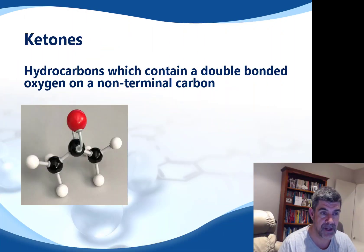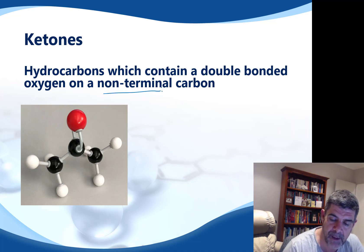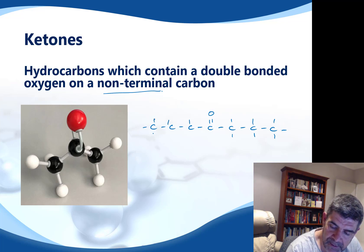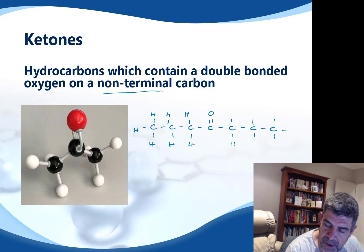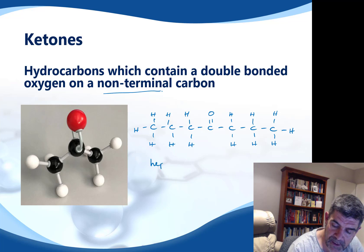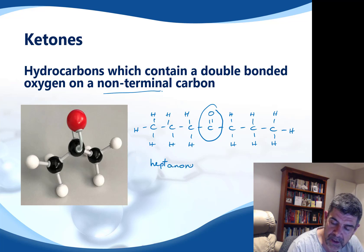A ketone is a hydrocarbon which contains a double-bonded oxygen on a non-terminal carbon. For example, if I had a compound with seven carbons — 1, 2, 3, 4, 5, 6, 7 — and the double-bonded oxygen is on one of the central carbons, making sure I put all of the bonds in correctly including carbon-oxygen and carbon-hydrogen bonds, I have seven carbons in total so that's hept. I have a double-bonded oxygen on a central carbon, not an end carbon, so it's heptanone.